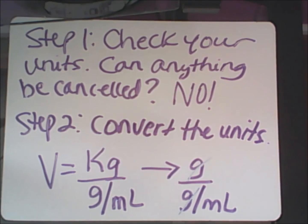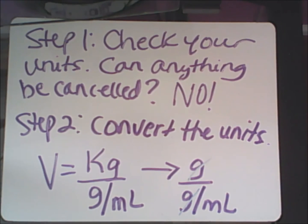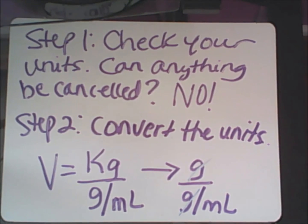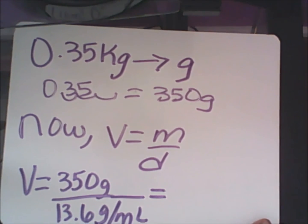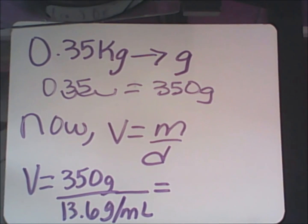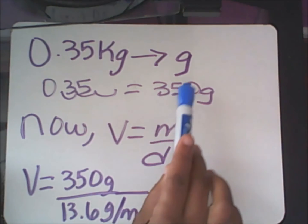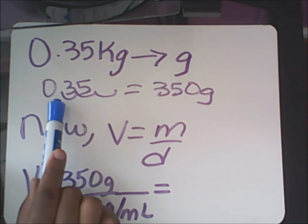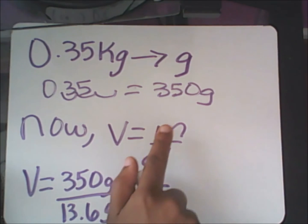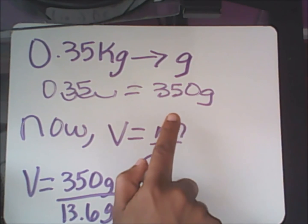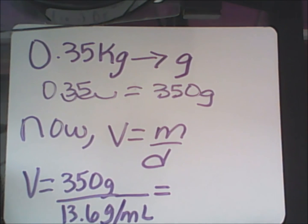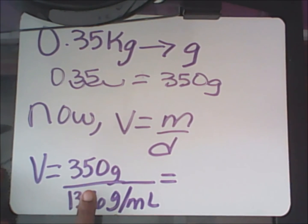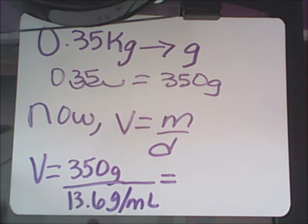The formula is of course volume is equal to mass over density. I change my kilograms to grams by moving my decimal three places to the right. Once I move my decimal places three over to the right, I get 350 grams. Now I can apply that formula to the problem. Volume is equal to 350 grams over 13.6 grams per milliliter. My final answer should have two significant digits.